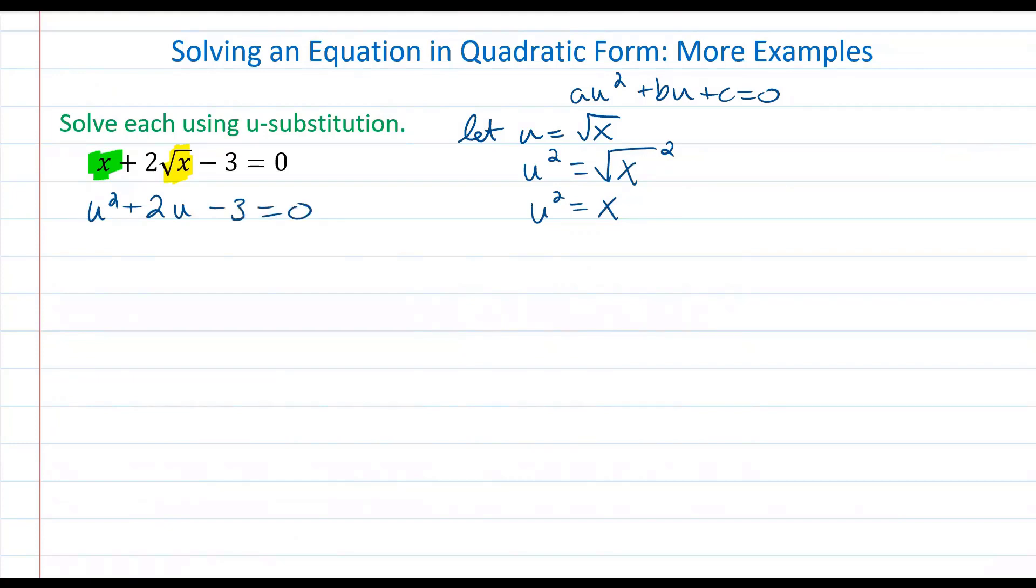So now we have a quadratic equation that's in terms of u and we can solve it using the strategies of factoring, completing the square, or the quadratic formula. Well I choose to factor, so I'm going to have two factors, u plus 3 and u minus 1 is equal to 0. I'm now going to use my zero product property to say u plus 3 is equal to 0 and u minus 1 is equal to 0. And so u is equal to negative 3 and u is equal to positive 1.